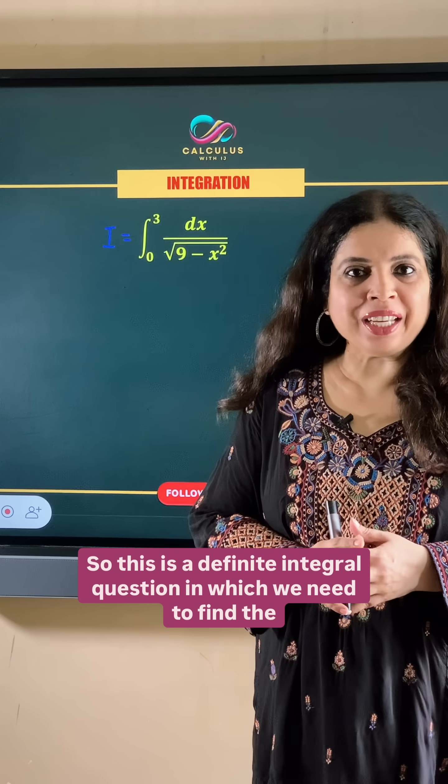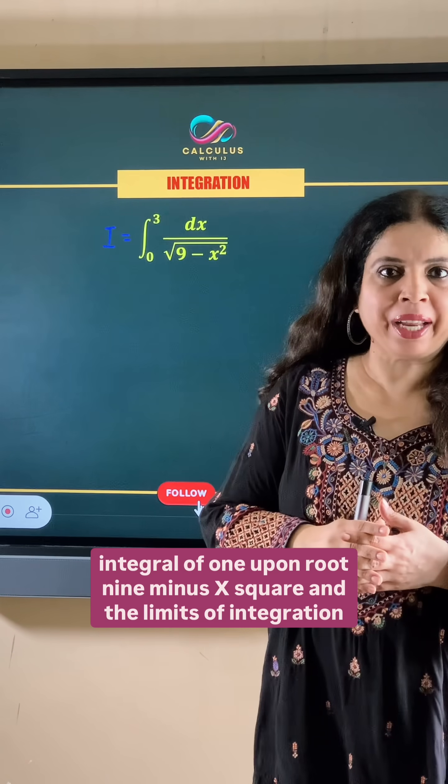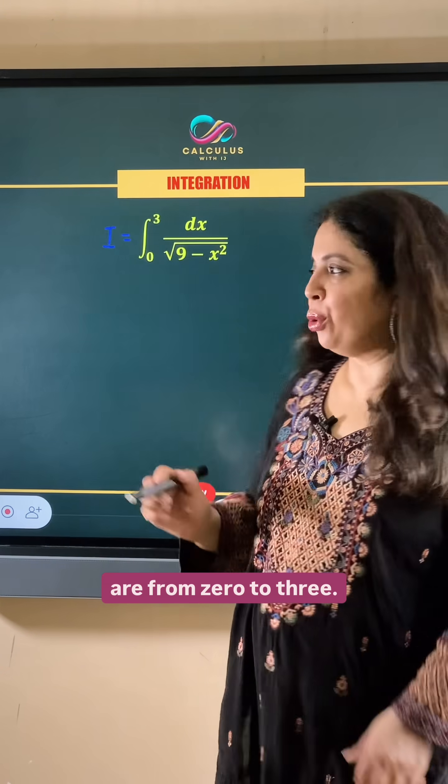So this is a definite integral question in which we need to find the integral of 1 upon root 9 minus x square and the limits of integration are from 0 to 3.